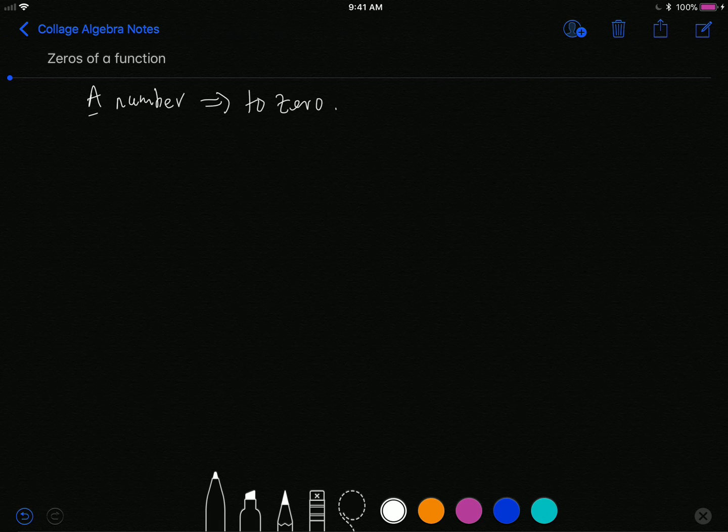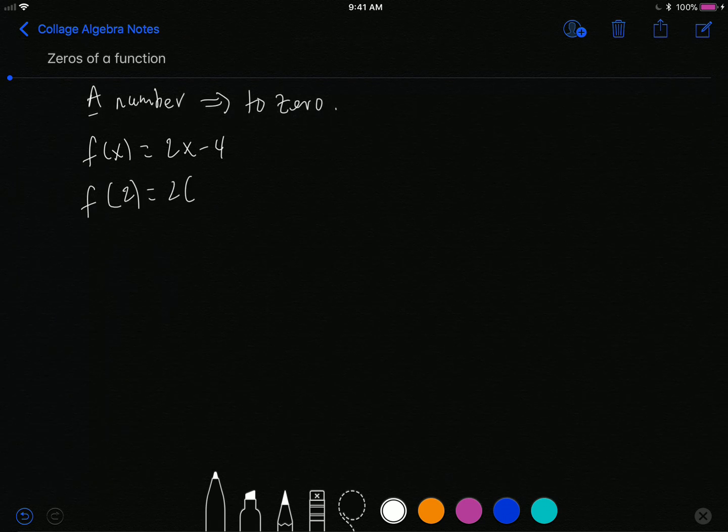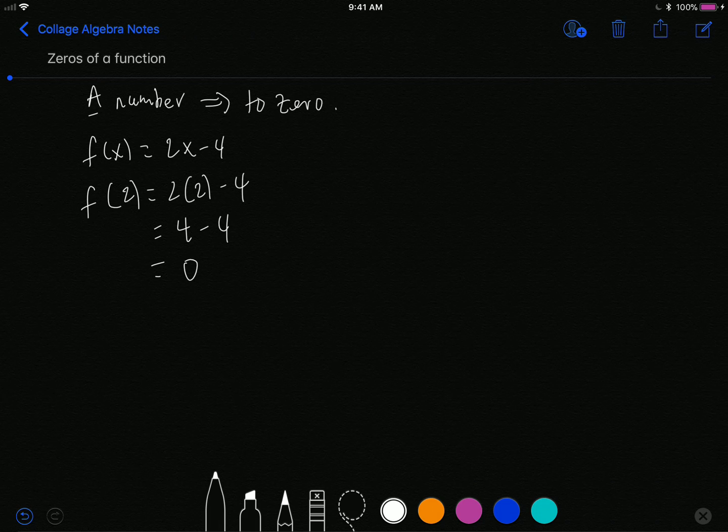For example, if I have a function f(x) equals 2x minus 4, well if I plug in the number 2, I will get 2 times 2 minus 4, which is 4 minus 4, which is equal to zero.